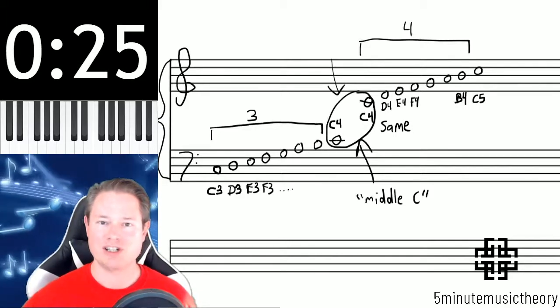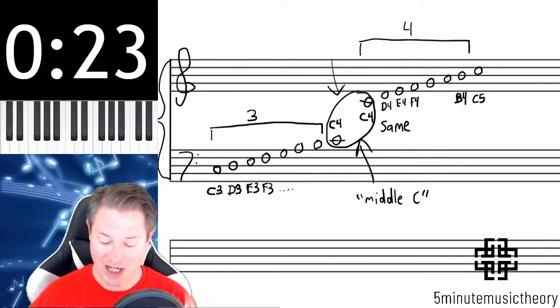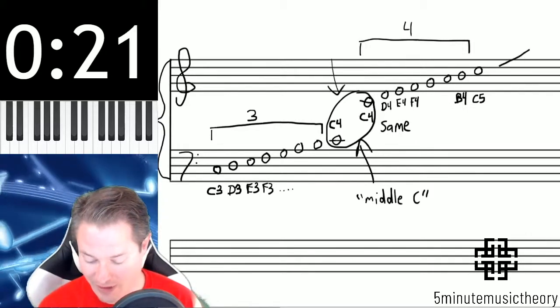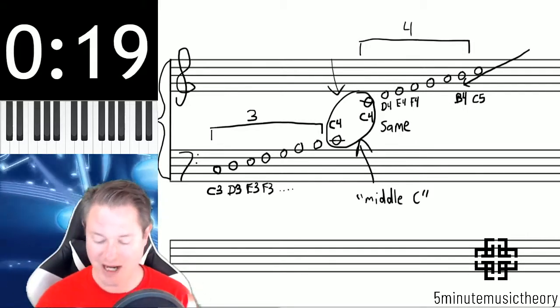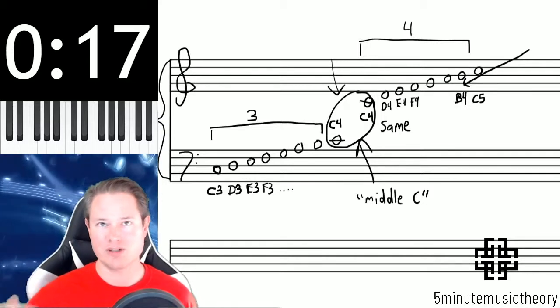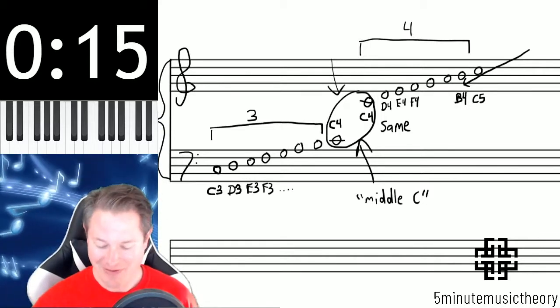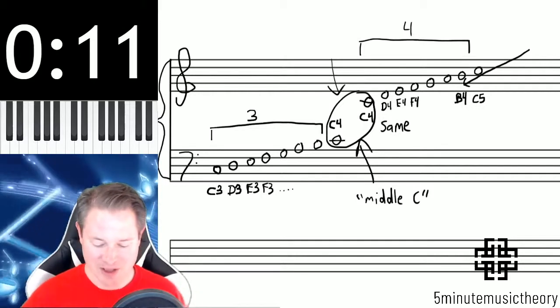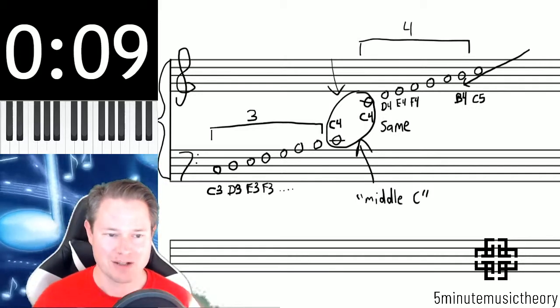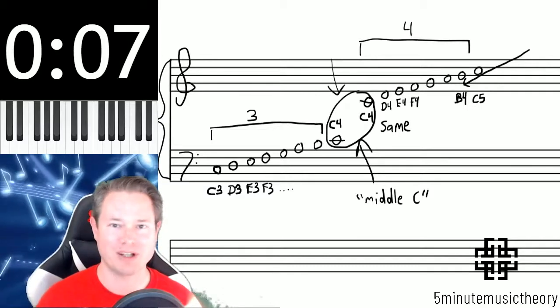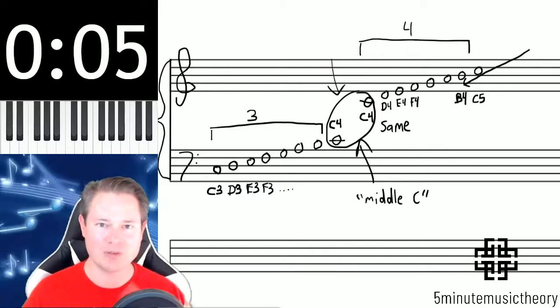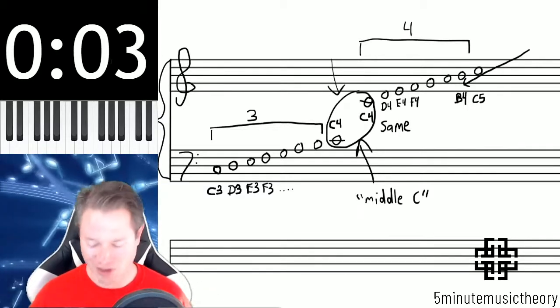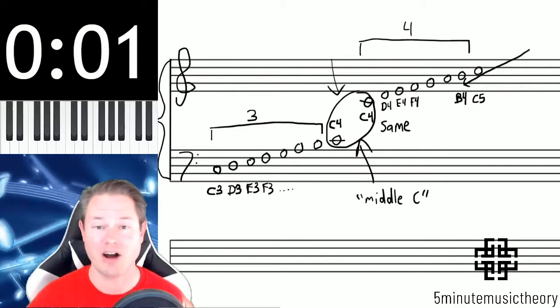And then every time you reach a C when you're going up, the numbers change. This gets a little complicated when you're coming down, because if you're coming down from the fifth register, we'd go D5, C5, and then we go to B4 because it's at those C's when we're going up. So there will be some supplementary videos to sort of hopefully uncomplicate this a little bit, because it can be a little bit tough at first to conceptualize this. But basically that's it on octave registers.